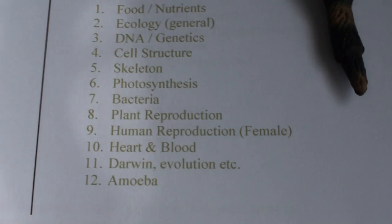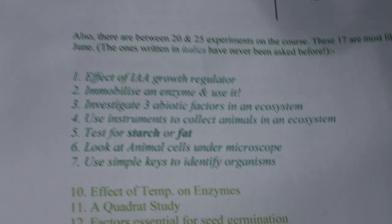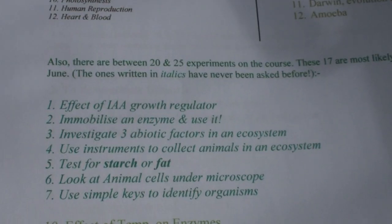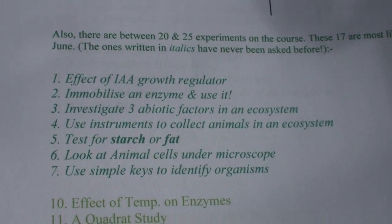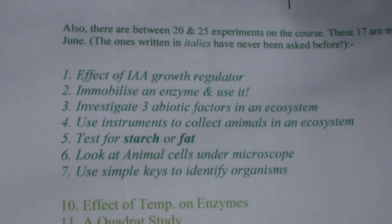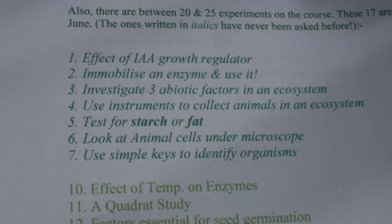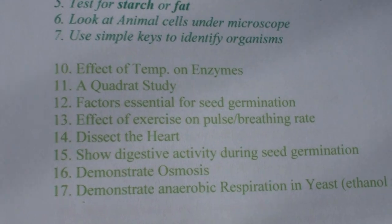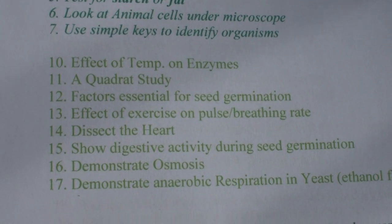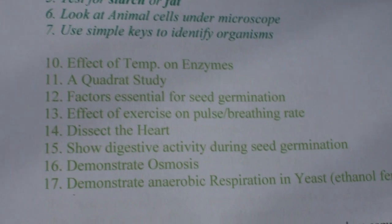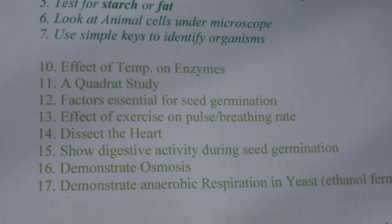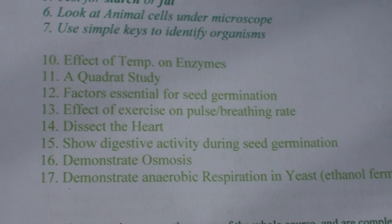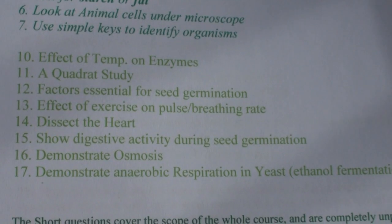There are some of the topics for the short questions as well — you can see the rest of them there. Now the experiments — the most likely ones: you could get one that hasn't really been asked before, like the effect of IAA growth regulator. But the most likely ones are: effect of temperature on enzymes, doing a quadrant study, factors essential for seed germination, effect of exercise on pulse and breathing rate, and to dissect the heart. There are the rest of them there.